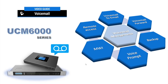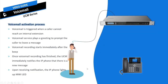The Grandstream UCM 6000 series is built with an advanced voicemail management system that offers the capability to record voice messages using the local storage of the UCM, notify users of new messages, and provide secure access to those messages through the use of pin numbers. On the UCM, there are five events that trigger the voicemail.